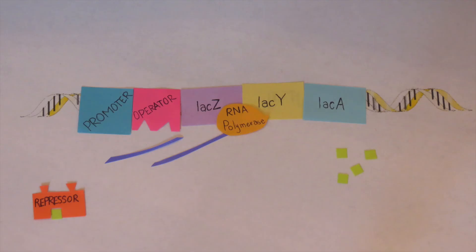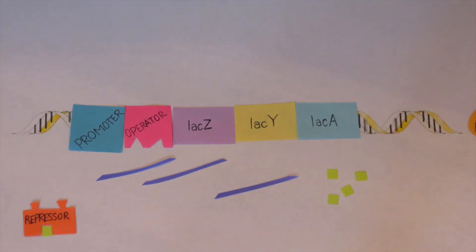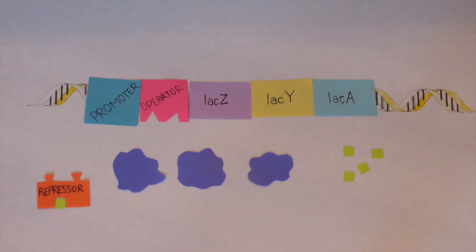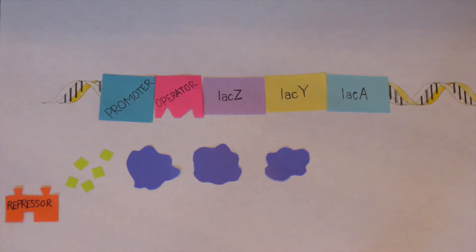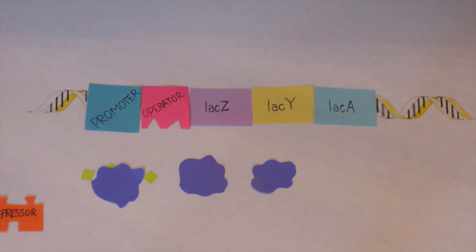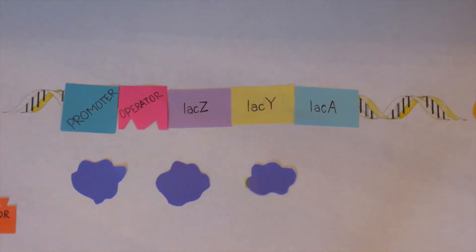Once this occurs, the RNA polymerase will finally be able to move all the way down the DNA since it is no longer being blocked by the repressor and can produce the RNA needed to produce the proteins that will process and break down the lactose.